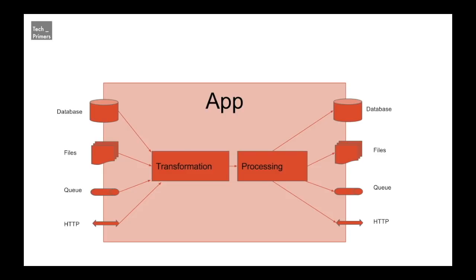The lifecycle of an application is to consume messages from a particular flow, and these flows are specific to different technologies — databases are a different technology, file systems are a different technology, queues are different, and HTTP protocols are different. Every time you integrate these flows into an application you need to write custom code for doing that.